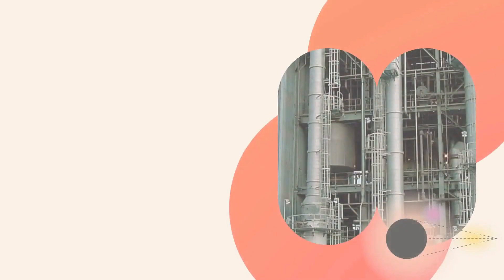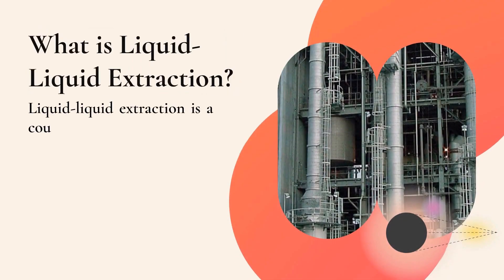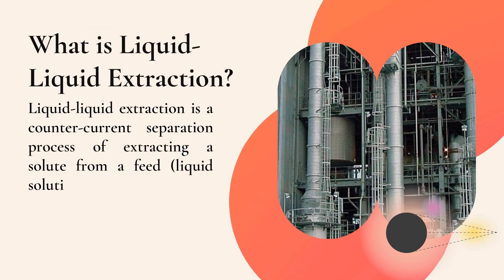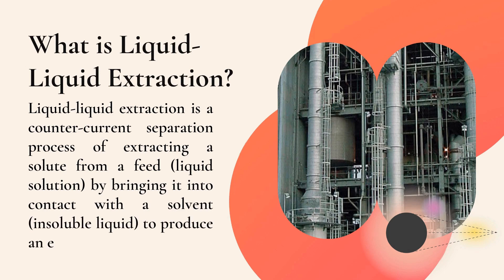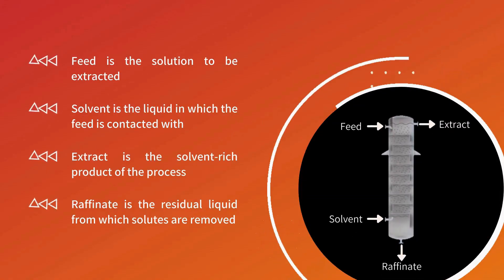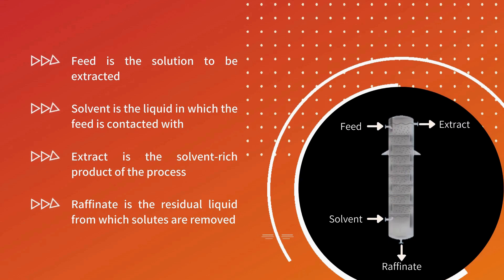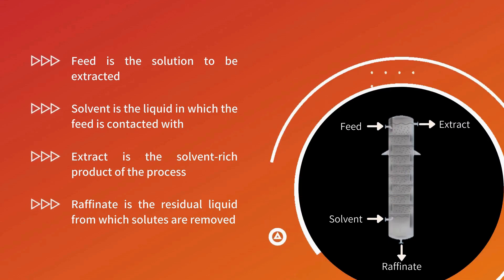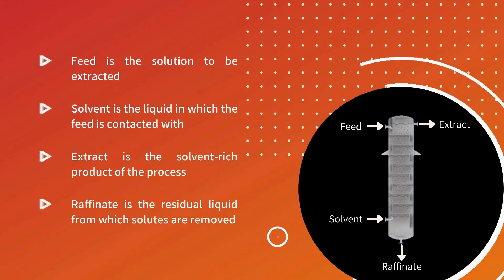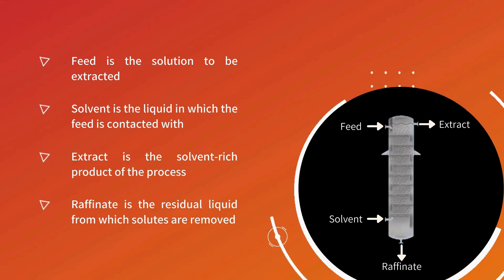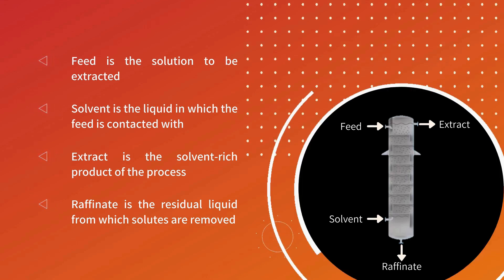What is liquid-liquid extraction? Liquid-liquid extraction is a counter-current separation process of extracting a solute from a feed by bringing it into contact with the solvent to produce an extract and a raffinate. Feed is the solution to be extracted. Solvent is the liquid in which the feed is contacted with. Extract is the solvent-rich product of the process. Raffinate is the residual liquid from which solutes are removed.